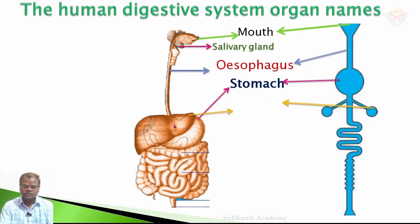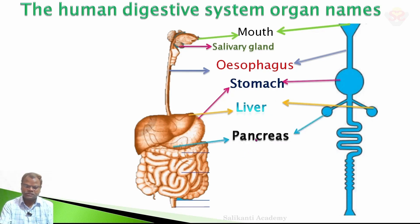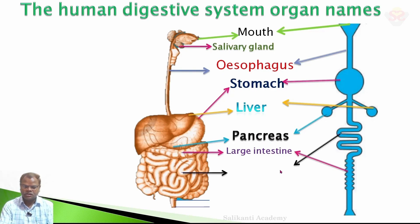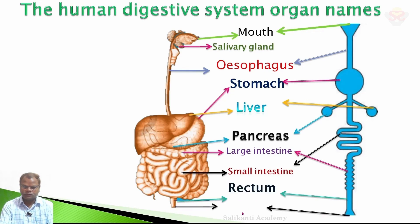And this one is the liver. And this leaf-like structure is the pancreas. And this big size structure is the large intestine. And this narrow tube-like structure is the small intestine. The ending of the large intestine is the rectum, and rectum is followed by the anus.